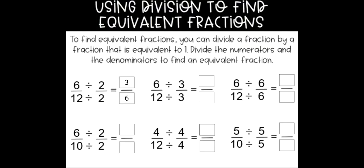The last thing that is important to note is that if these numbers weren't filled in and you needed to decide what number to divide by, you need to pick a number that can go inside of both your numerator and your denominator evenly — you don't want to have any remainders left over. So if we look at the example we just did, 2 fit inside of 6 evenly with nothing left over, and 2 fit inside of 12 evenly with no remainders.